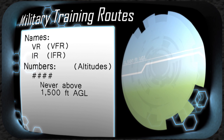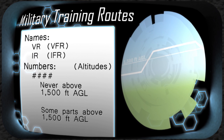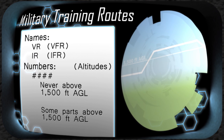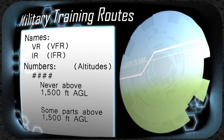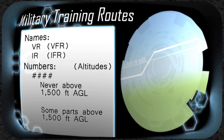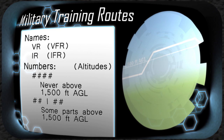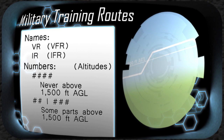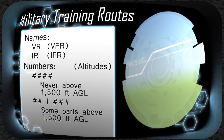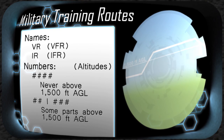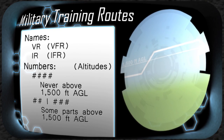MTRs that include one or more segments above 1,500 feet AGL will be identified by two- or three-digit characters — for example, IR-24 or VR-318.